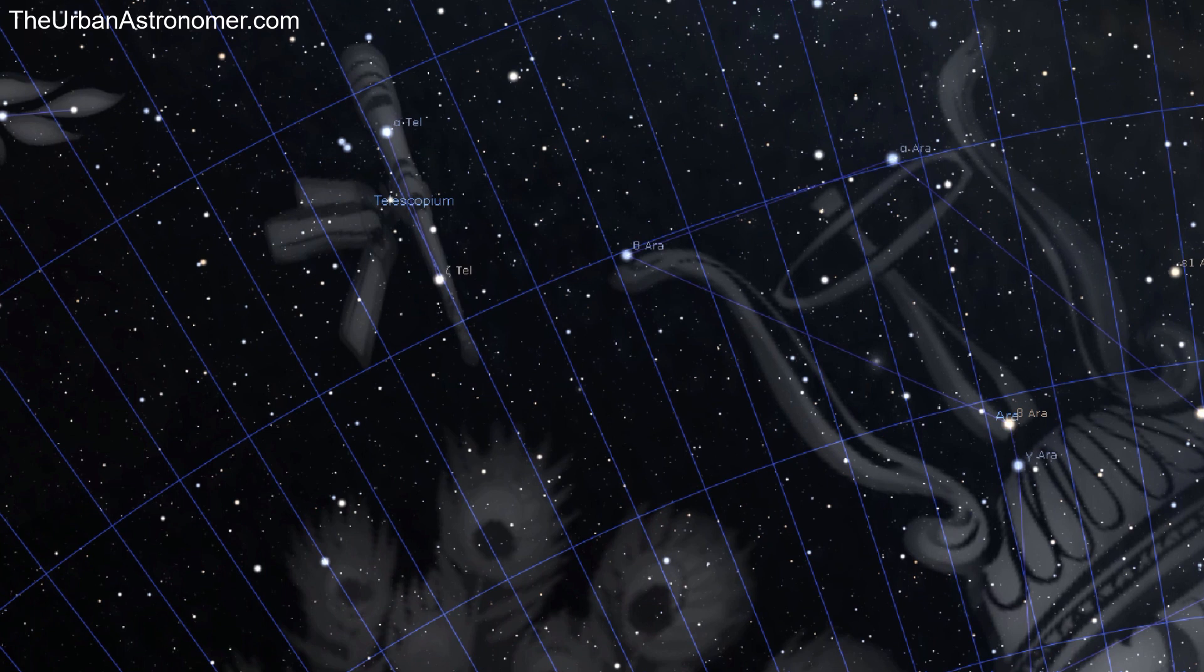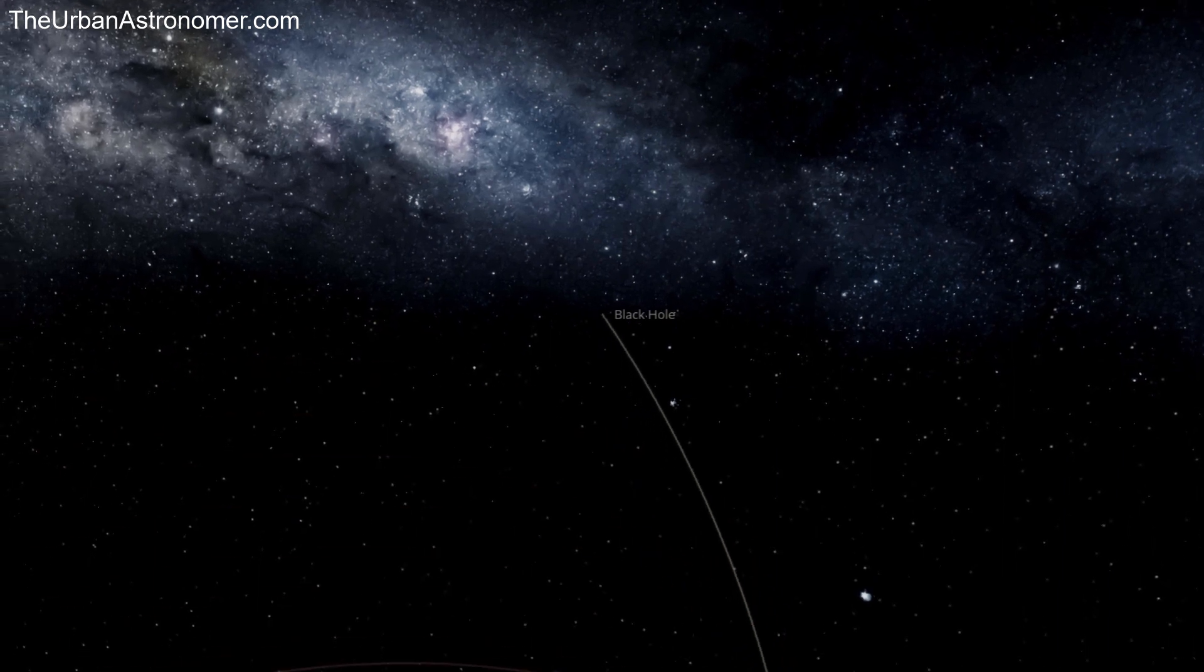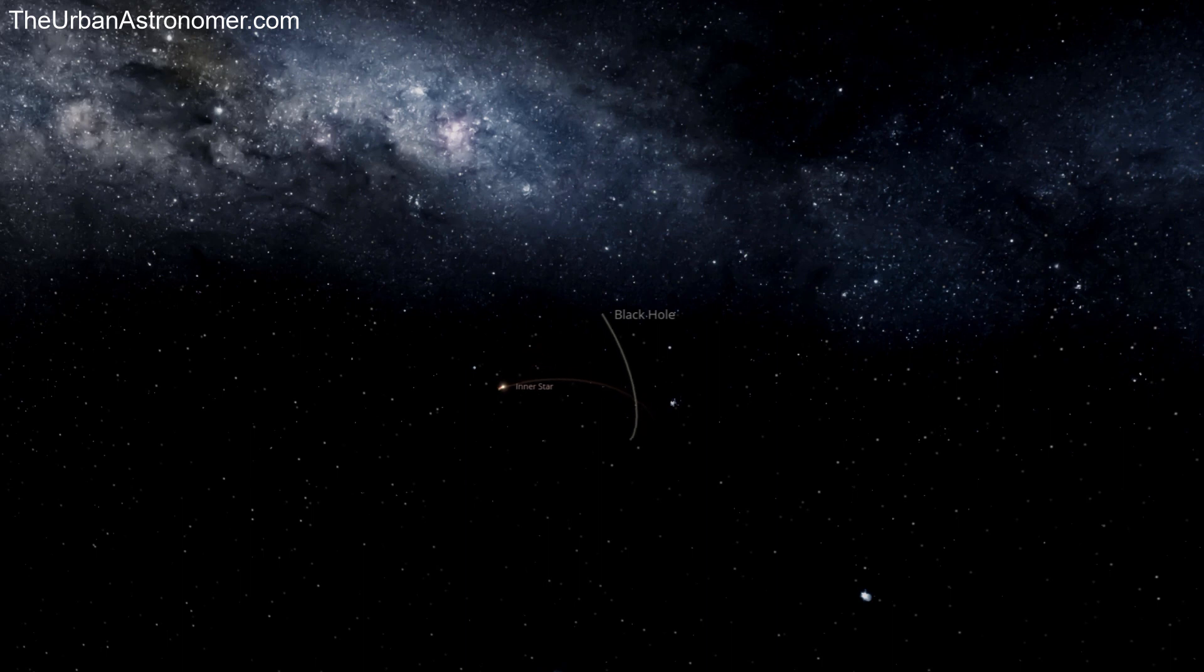It just goes to show how difficult it is to detect black holes. The astronomers from the European Southern Observatory were not actually looking for black holes but were studying the system as part of a larger study of stars that orbit in pairs.